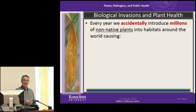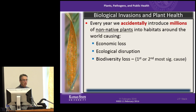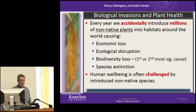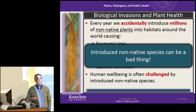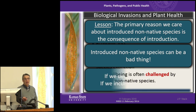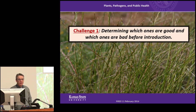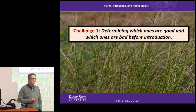Every year we accidentally introduce millions of non-native plants into habitats around the world, causing economic loss, ecological disruption, biodiversity loss, and species extinction. Human well-being is often challenged by introduced non-native species — so introduced non-native species can be a bad thing. The lesson is the primary reason we care about introduced non-native species is the consequence of their introduction. If we derive benefit, great. If we incur harm, not so good. One of the challenges we have is determining which ones are good and which ones are bad before they're introduced.